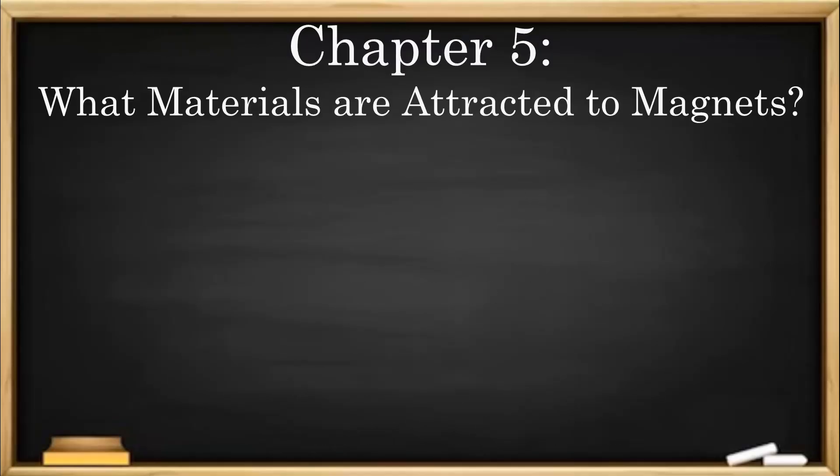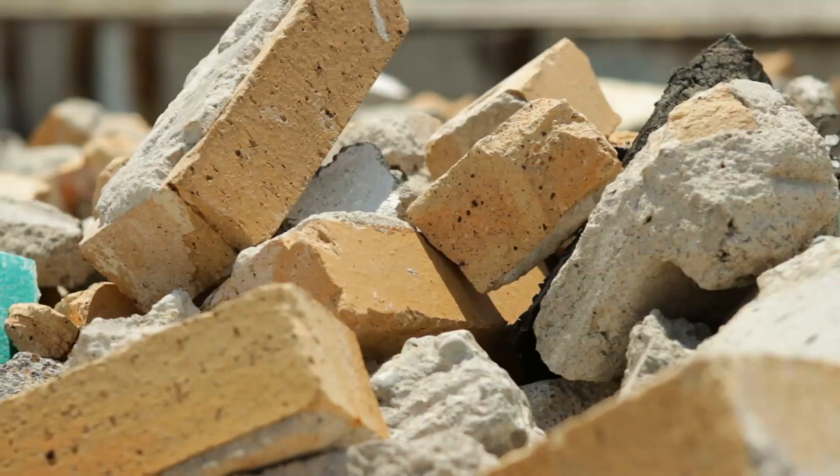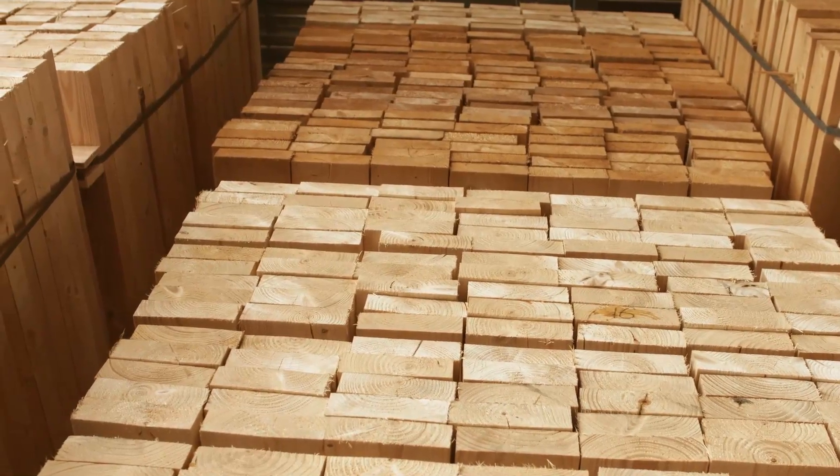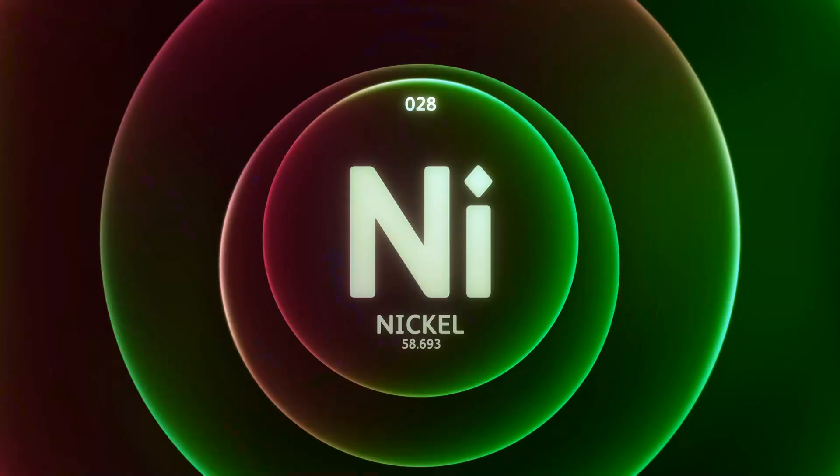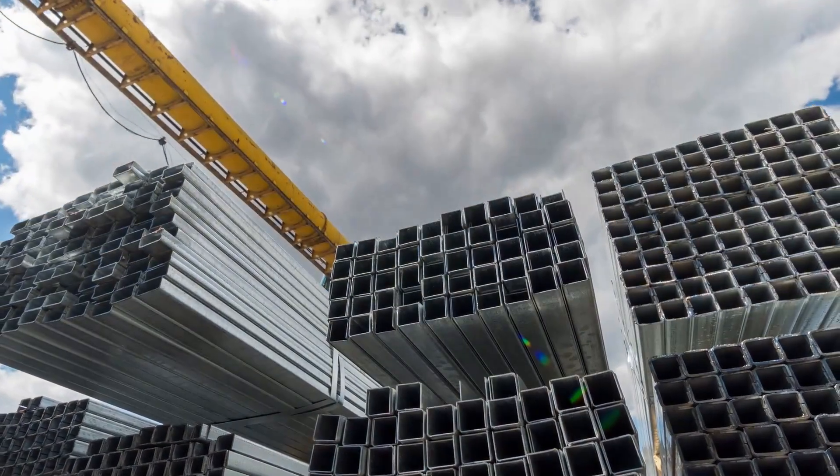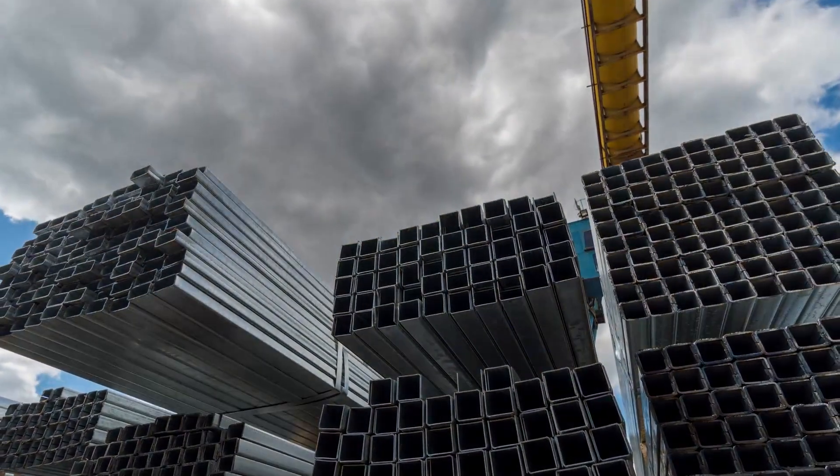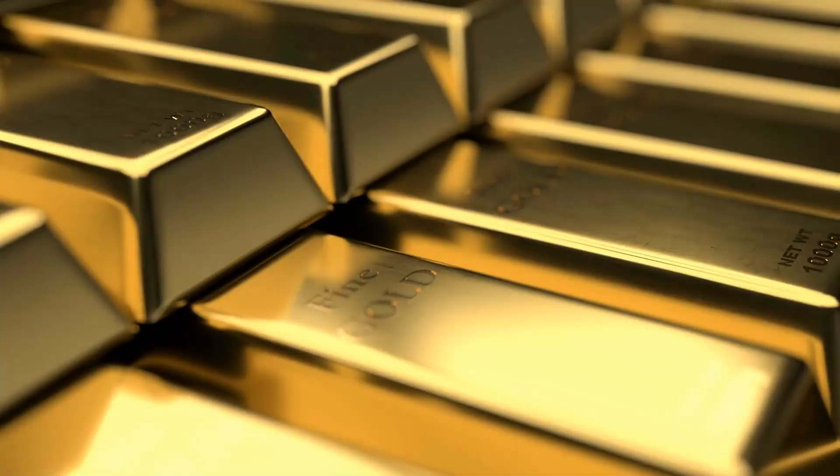Chapter 5: What materials are attracted to magnets? Not all materials are attracted to magnets. In fact, only certain metals are magnetic. These include iron, nickel, cobalt. Liquefied oxygen is also magnetic, which is a unique property that makes it interesting to scientists. It's important to know that most metals are not magnetic. For example, metals like aluminum, copper, and gold do not get attracted to magnets.